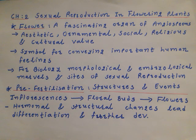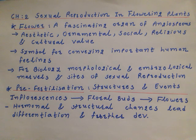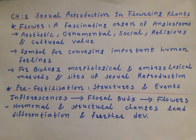Because flowers possess male and female sexual reproductive organs, we will first study pre-fertilization structures and events — how does a flower develop. At maturity in flowering plants, inflorescence develops floral buds on which flowers develop. During this time period, hormonal and structural changes lead to differentiation and further development.